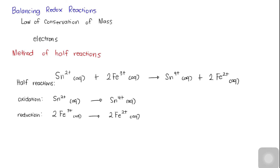Notice that for the oxidation half-reaction, the oxidation state of tin changes from 2+ to 4+. Based on the law of conservation of mass, the charges on both sides of the equation must also be balanced. Therefore, if we have 2+ on the reactant side and 4+ on the product side, we need to balance it out by adding electrons. For oxidation reactions, electrons are shown on the product side. So here, we will be adding two electrons, making both sides of the equation balanced.